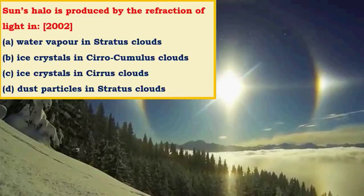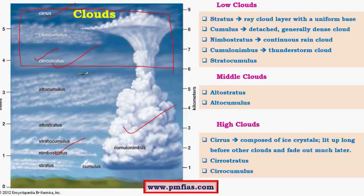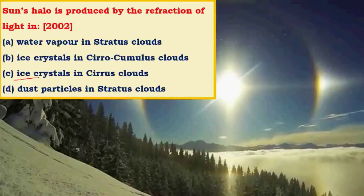Here is a question from previous papers: Sun's halo is produced by — (A) refraction of light in water vapor in stratus clouds, (B) ice crystals in cirrocumulus clouds, (C) ice crystals in cirrus clouds. Both cirrocumulus and cirrus clouds are part of the upper layers of the troposphere. However, cirrocumulus clouds occur at around 6 km where they may be partially water droplets or ice crystals, whereas cirrus clouds from 8 to 13-14 km are present almost entirely as ice crystals. So sun's halo is produced due to refraction in hexagonal ice crystals in cirrus clouds — the answer is C.